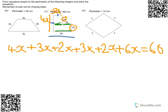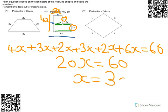Lot of x's. And that equals 60, not 66 that that looks like. Add those up and you get 20x equals 60. So x equals 3cm.